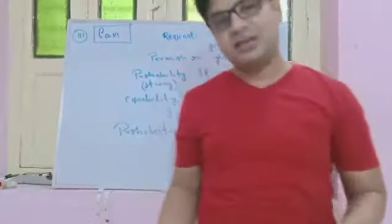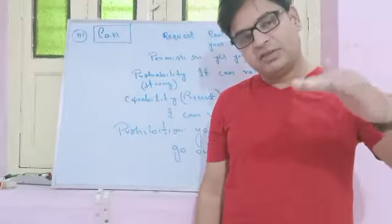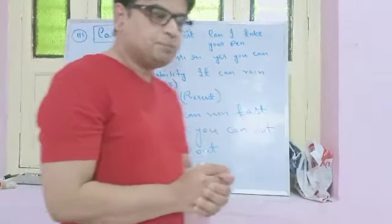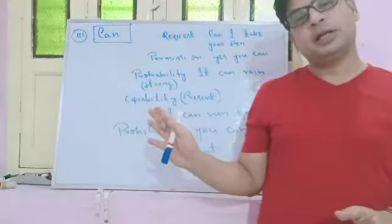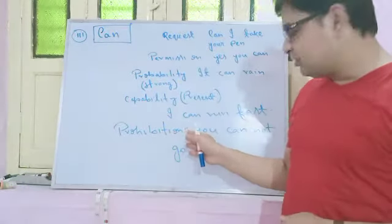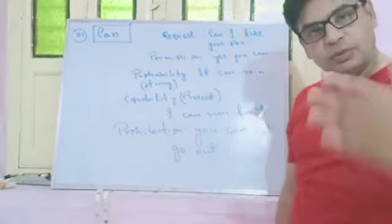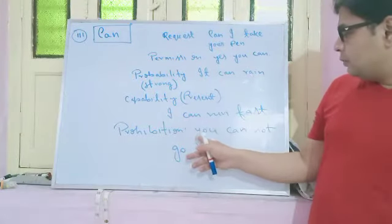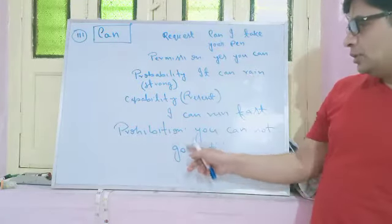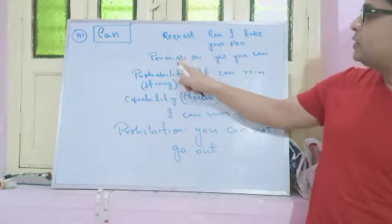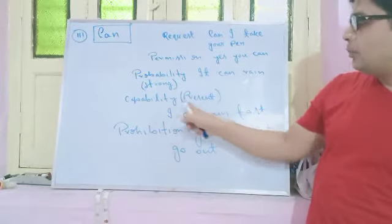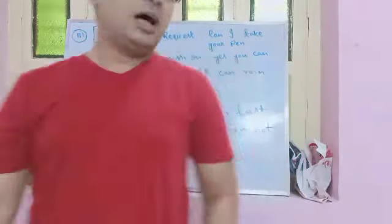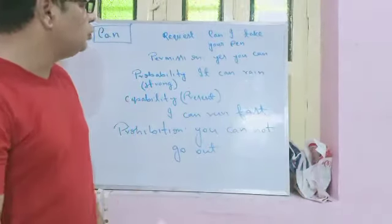Fourth, 'can' expresses capability of the present — for example, 'I can run fast,' 'You can work hard,' 'You can pass the exam.' It always expresses present capability. Fifth, 'can' is used for prohibition — stopping someone from doing something. For example, 'You cannot go out' means that person is prohibited from going outside. So the five uses of 'can' are: request, permission, probability, capability of present, and prohibition.